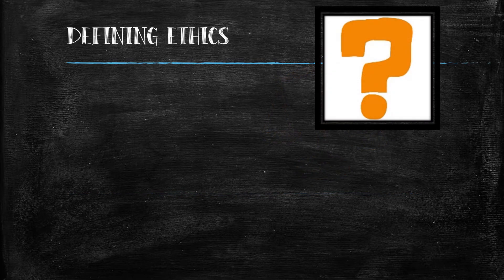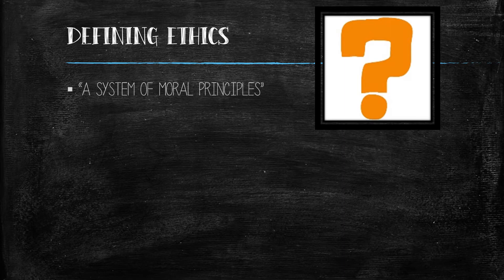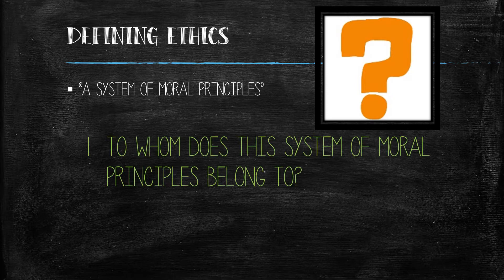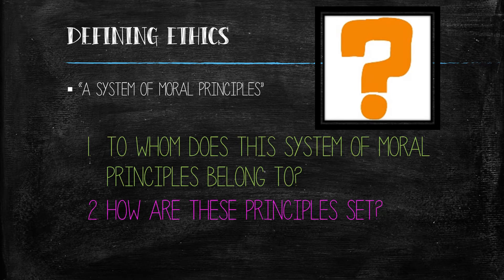So what exactly do we mean when we say ethics? According to the Random House Dictionary, we mean a system of moral principles. But this definition requires the further consideration of two questions: to whom does this system of moral principles belong, and how are these principles set?